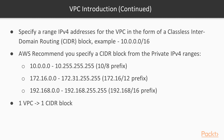You can see we have a 10/8 prefix, a 172.16/12 prefix, or a 192.168/16 prefix. AWS recommends that you specify one of these CIDR blocks from these ranges, though you can also use a public IPv4 range if you want to. When you create a VPC, it will be associated with one CIDR block — you can only have one CIDR block associated with one VPC.